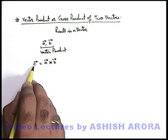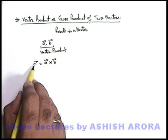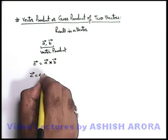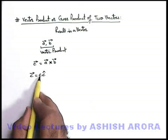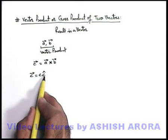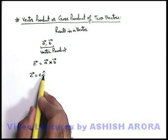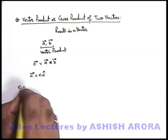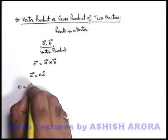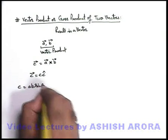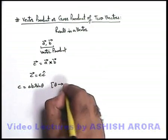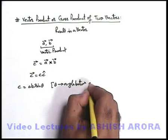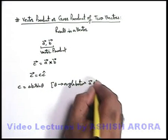Since c is a vector, it has a magnitude as well as a direction. So c vector is written as c into c-cap, where c is the magnitude and c-cap is the direction — a unit vector in the direction of c vector. The magnitude c can be written as ab sinθ, where θ is the angle between a vector and b vector.